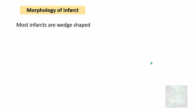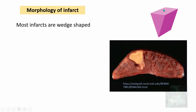Most infarcts are wedge-shaped. The apex of the wedge is formed by the site of occlusion, whereas the base is formed by the periphery of the organ involved. This is an example of a wedge-shaped infarct of the kidney — you can make out the apex where the occlusion occurred, and the base at the periphery of the kidney. This is a pale, wedge-shaped infarct.